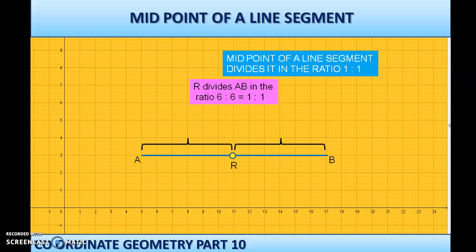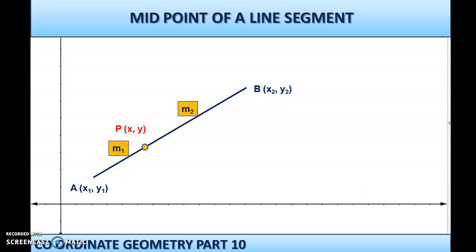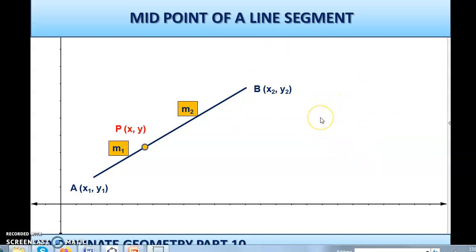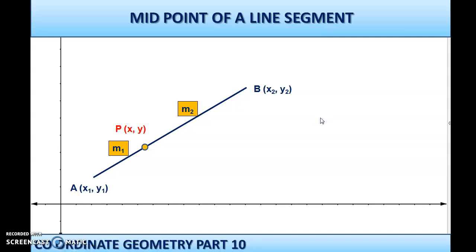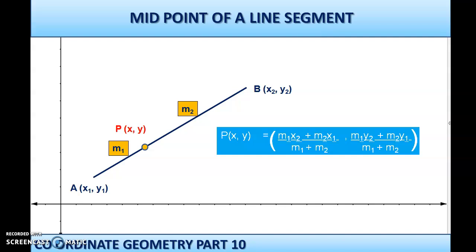This is the important thing: a point exactly in the middle of a given line segment divides it in the ratio 1:1. We are going to use this now to derive the coordinates of the midpoint. When you have a line segment AB whose endpoints have coordinates (x1, y1) and (x2, y2), the formula to calculate the coordinates of a point dividing it in ratio m1:m2 is: x-coordinate = (m1·x2 + m2·x1) / (m1 + m2), and y-coordinate = (m1·y2 + m2·y1) / (m1 + m2). Since the midpoint divides the segment in ratio 1:1, we substitute m1 = 1 and m2 = 1.